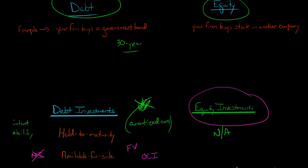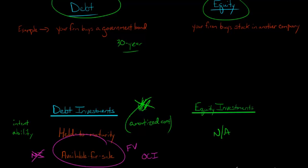Equity investments, until 2018, could also be classified as available for sale under US GAAP. However, from 2018 going forward, the Financial Accounting Standards Board passed ASU 2016-01, which said that equity investments can no longer be classified as available for sale.